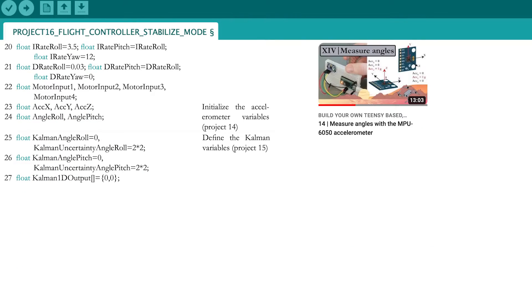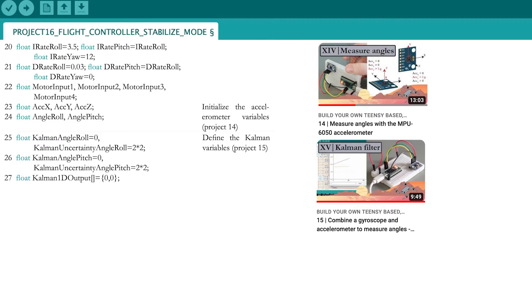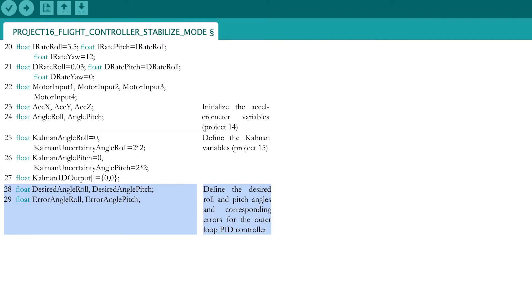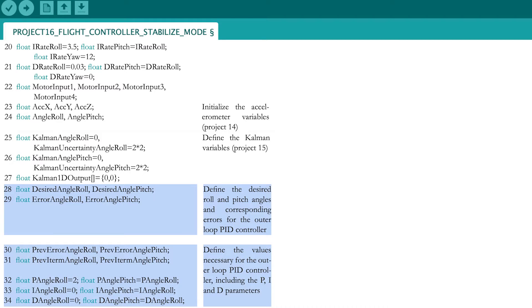Also, define the variables for the accelerometer and Kalman filter. Add 4 new variables for the desired roll and pitch angles and the corresponding errors. For the outer loop PID controller, 10 additional variables are necessary.